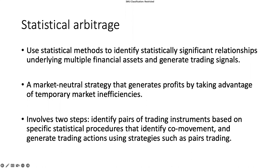Statistical arbitrage uses statistical methods to identify a relationship. This relationship needs to have statistical significance, which means it needs to pass certain statistical hypothesis tests. The relationship is among multiple financial assets — we find the underlying long-term relationship and generate trading signals. A unique thing about statistical arbitrage is that it is a market-neutral strategy used to generate profits by taking advantage of temporary market inefficiencies.